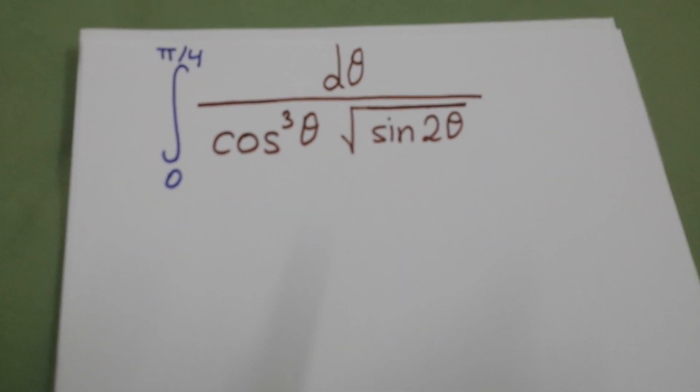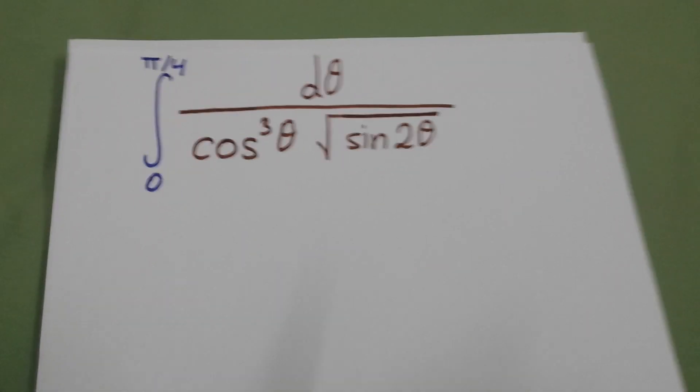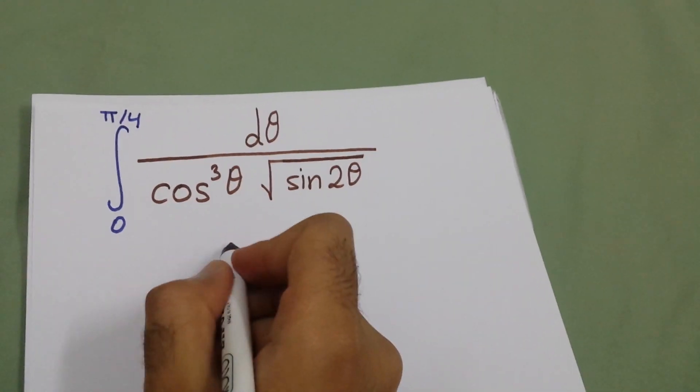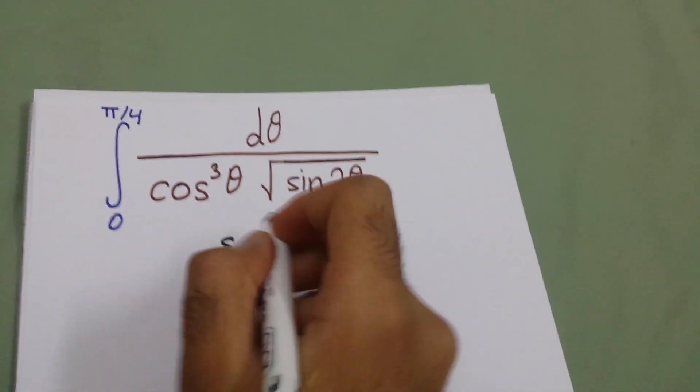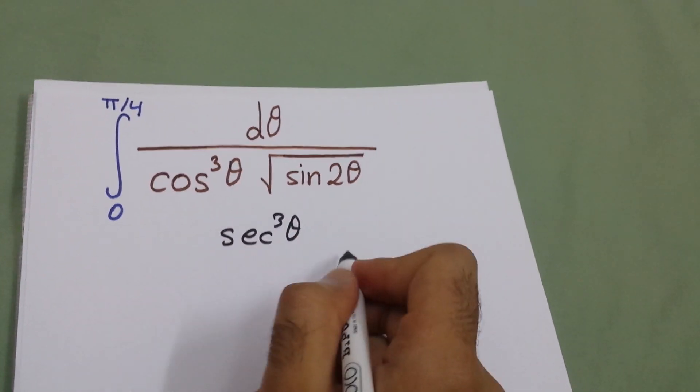We will take cosine cubed and make it in the numerator, so it will be secant cubed theta over